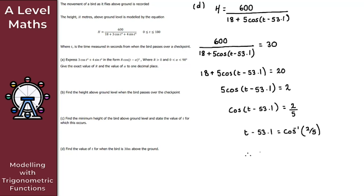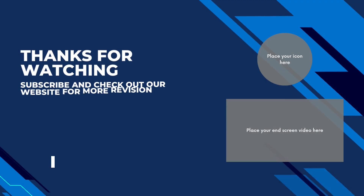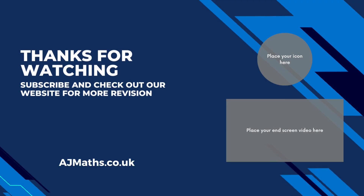Calculating on the calculator, T = 119.5 seconds to one decimal place. That gives us the solution to part D, completing the question on modeling with trigonometric functions.